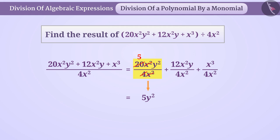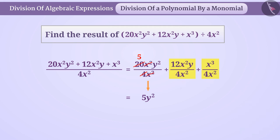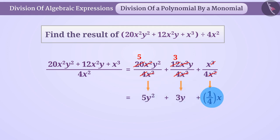Now can you tell me what is the result of division from the second and third terms? Think! In the division of the second term, 12 divided by 4 gives 3 and we cancel x squared from numerator and denominator — so the result is 3y. Similarly, the result of the third term is 1 divided by 4x. In this way we get the final result: 5y squared plus 3y plus 1 divided by 4x.